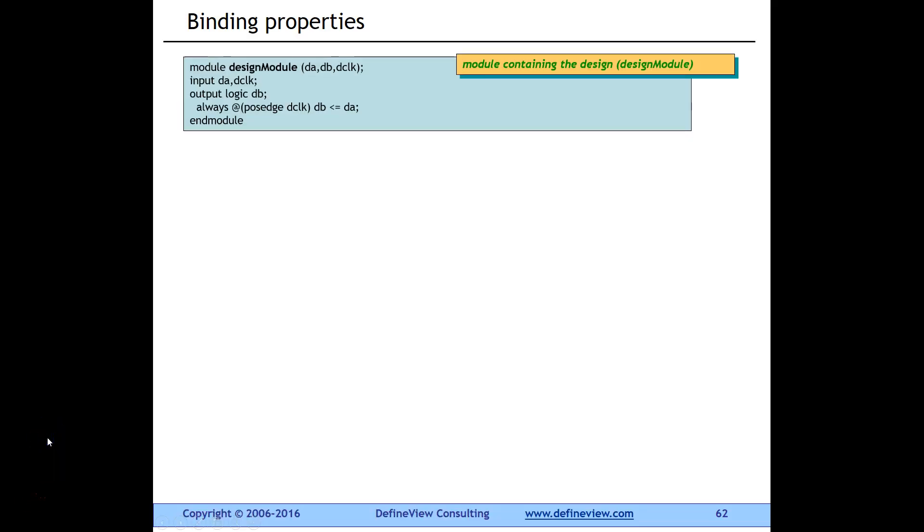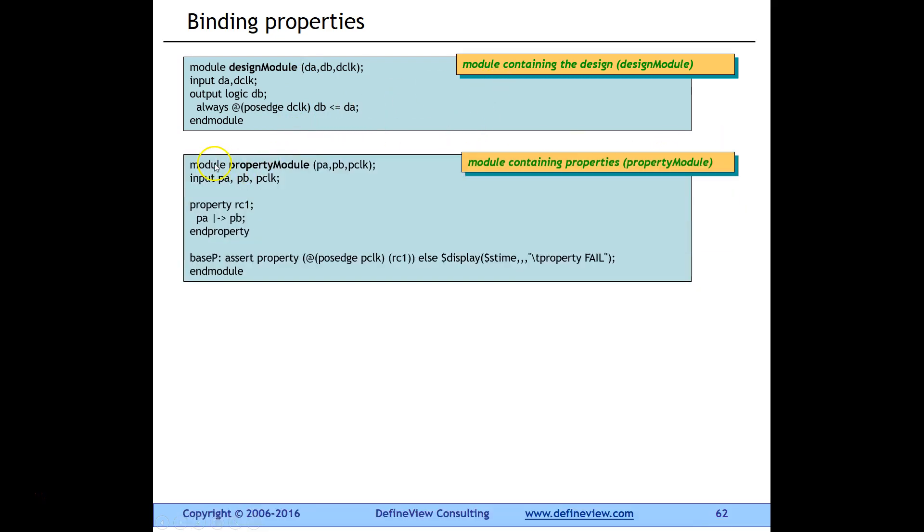So binding properties. Let's say you have a module called design module with inputs DA, D clock, and output DB. I've used D for design as you will see the reason for that. Now the second module is your property module. This property module will have properties that work on this design, and the property module can only have inputs. It doesn't make sense to have output from the property module.